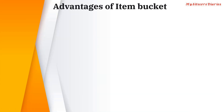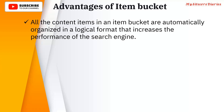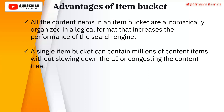The advantages of item buckets: all content items in an item bucket are automatically organized in a logical format, which increases the performance of the search engine. When you convert an item to a bucket, it automatically organizes items into a folder structure depending on the date and time they were created. A single item bucket can contain millions of content items without slowing down the UI or congesting the content tree.